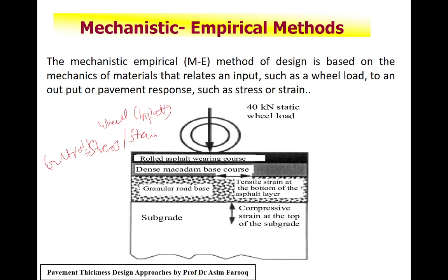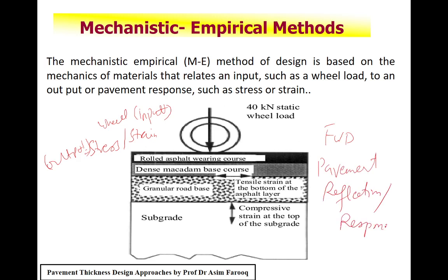To understand the mechanistic empirical design in more detail, it requires both long-term and short-term data. Different parameters need to be considered, such as different types of vehicles, different pavement types, response calculations from falling weight deflectometer systems, analysis of stresses, and design thickness. It is completely based on lab tests as well as database preparation.